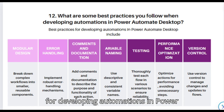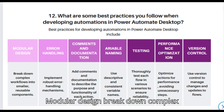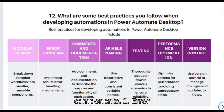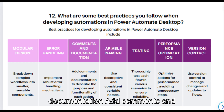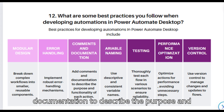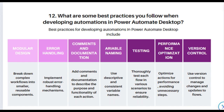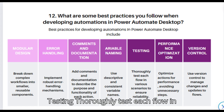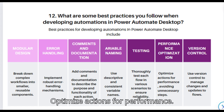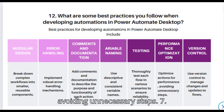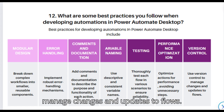Question 12: What are some best practices you follow when developing automations in Power Automate Desktop? Best practices include: 1. Modular design: break down complex workflows into smaller reusable components. 2. Error handling: implement robust error handling mechanisms. 3. Comments and documentation: add comments to describe the purpose and functionality of each action. 4. Variable naming: use descriptive and consistent variable names. 5. Testing: thoroughly test each flow in various scenarios to ensure reliability. 6. Performance optimization: optimize actions for performance, avoiding unnecessary steps. 7. Version control: use version control to manage changes and updates to flows.